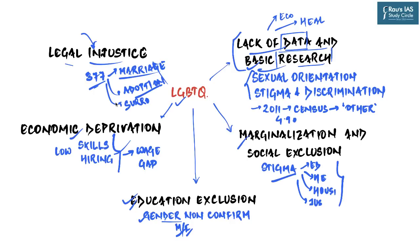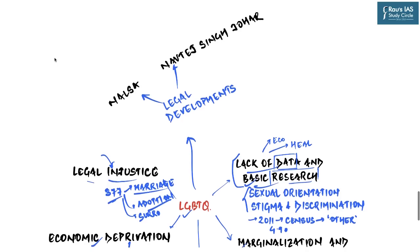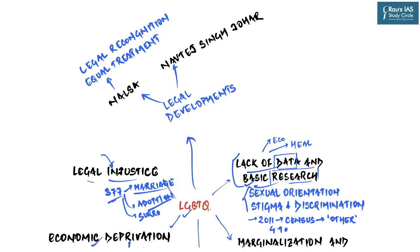Two important legal judgments are worth remembering: the NALSA judgment of 2014, where the Supreme Court held that transgender people should be legally recognized according to their gender identity, enjoy all fundamental rights, and receive special benefits in education and employment. In Navtej Singh Johar vs Union of India 2018, the Supreme Court decriminalized Section 377 of IPC — meaning homosexuality was decriminalized and that Section 377 was violative of the right to freedom, life, privacy, and equality of sexual minorities.